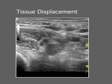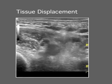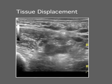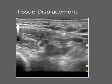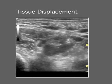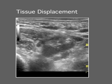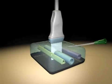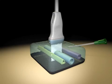Needle position can also be inferred by observing the distribution of small test injections and making needle adjustments. Often, slight tilting of the probe can be used to locate and follow the advancing needle tip.